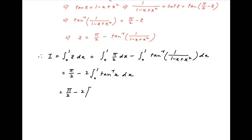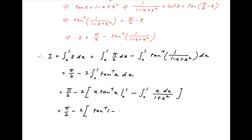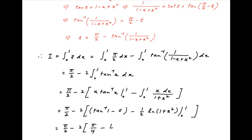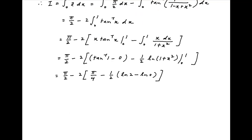Now, integrating by parts, we get the value of I is equal to pi upon 2 minus 2 times, in brackets, x times tan inverse x minus the integral from 0 to 1 of x times the derivative of tan inverse x, which is 1 upon (1 plus x squared) dx. Putting in the limits, we get pi upon 2 minus 2 times, in brackets, tan inverse 1 minus 0 minus half of ln of (1 plus x squared), with limits 0 and 1.